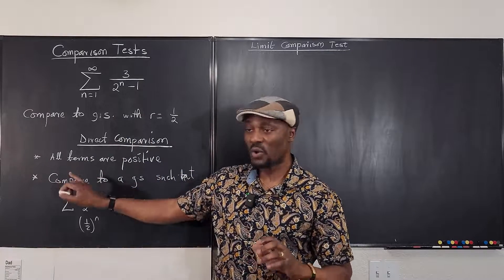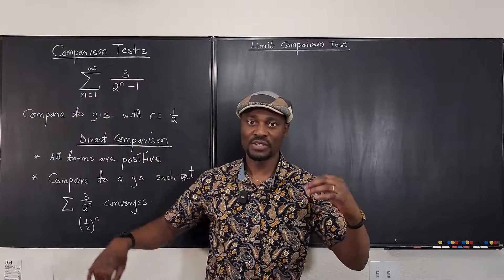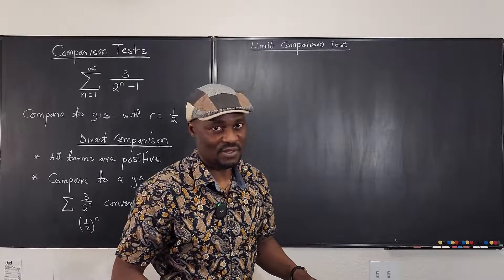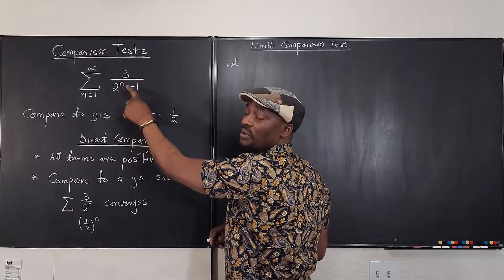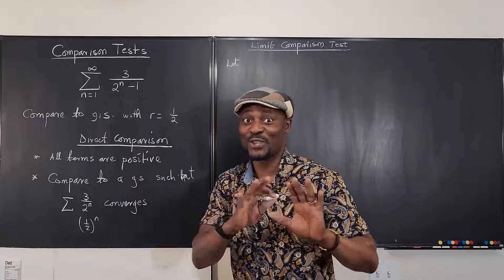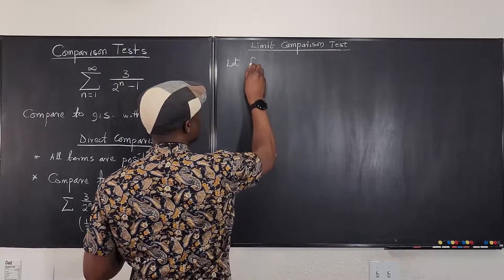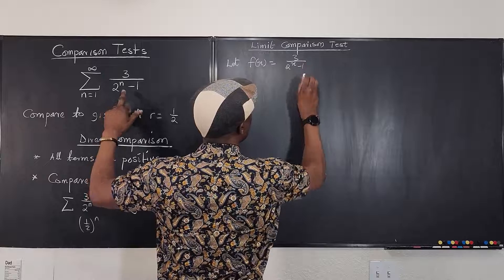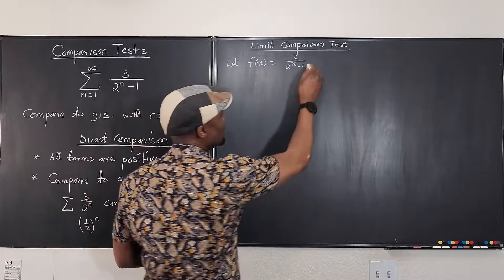For the limit comparison test, the first condition is all terms must be positive — we already confirmed that. Now we need to verify this is a decreasing function. The most secure way is to take the derivative. Please do not differentiate the series directly, because it is not continuous — we're jumping from n=1 to n=2. Instead, let f(x) = 3 over (2^x minus 1), treating it as a continuous function, and then take the derivative.